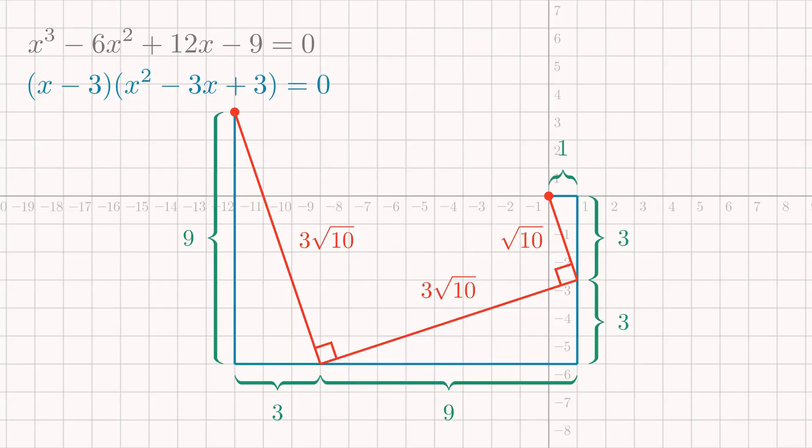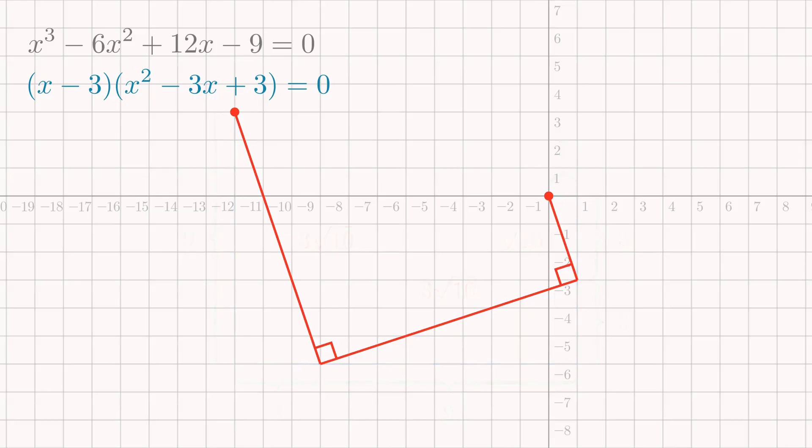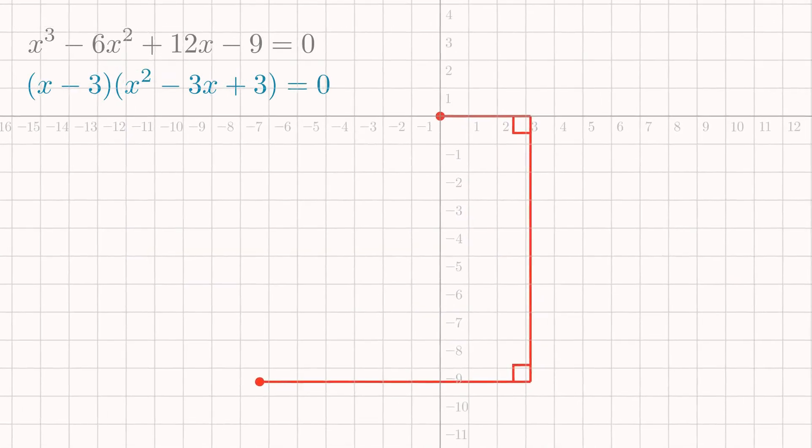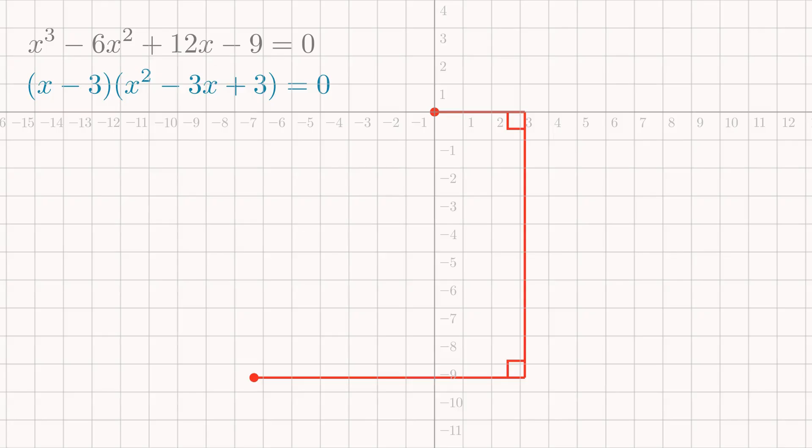If we ignore the blue lines and focus only on the red laser rays, we can rotate it and see that it looks awfully similar to a Lill diagram. In fact, it is just a scaled-up version of the diagram that corresponds to the quadratic factor. And we already know how to solve these. Doing so gives the three solutions x equals 3 and 3 over 2 plus or minus root 3i over 2.